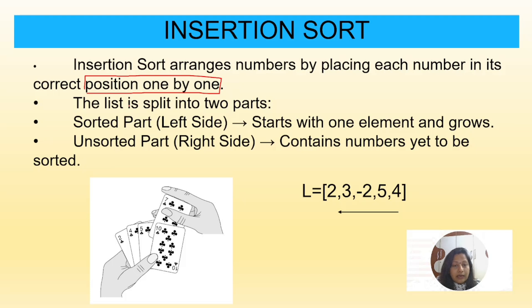This is also working with ascending order only. How it will work? The list is split into two parts — the left side starts with one element and grows. The complete list we consider as unsorted initially, and the first element we always consider as sorted. Whatever smallest element comes, it will go and be placed before the first element, so the left sorted side grows automatically. The unsorted part on the right side contains numbers yet to be sorted.